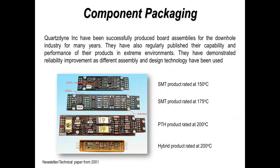Moving on to a practical application, one particular contract manufacturer in the US has highlighted three or four different products produced over the years. The first two are predominantly SMT technology operating at 150 and 175 degrees, still working with conventional materials and conventional board substrates. But when you go above 200 degrees C, we're looking at polyimide substrates or moving on to ceramic or metal-backed printed circuit board assemblies.